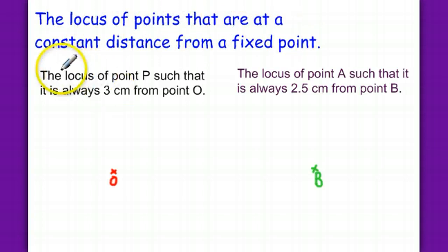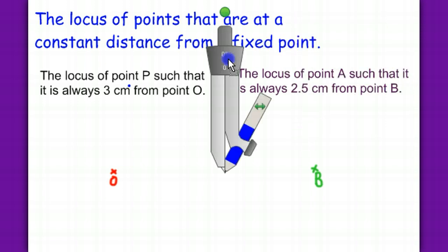For example, the locus of point P such that it is always 3 cm from point O. Now, we have a point O here and the locus from one point is a circle. You should know that. The locus from one point is a circle.